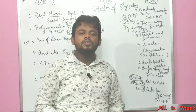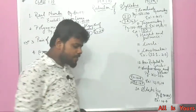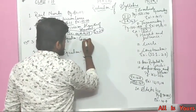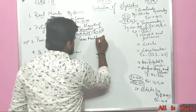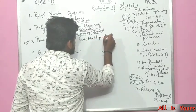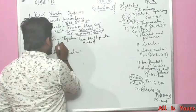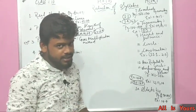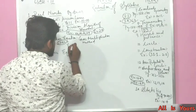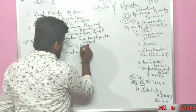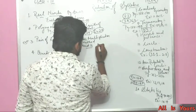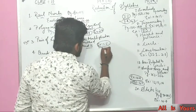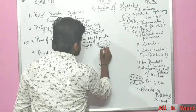Chapter 3, Pair of Linear Equations — only one trending topic has been deleted, which is the Cross Multiplication Method. This comes under page numbers 57 to 62, which have been deleted, including examples 14, 15, and 16. In Exercise 3.5, some of the questions — not everything, just some questions — have been deleted from this chapter.